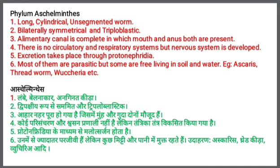The sixth point is that these are parasitic, but some are free-living in soil and water. Parasitic animals completely rely on different organisms for living and food. Examples of Aeschelminthes are Ascaris, Threadworm, and Wucheria. This concludes our study of phylum Aeschelminthes.